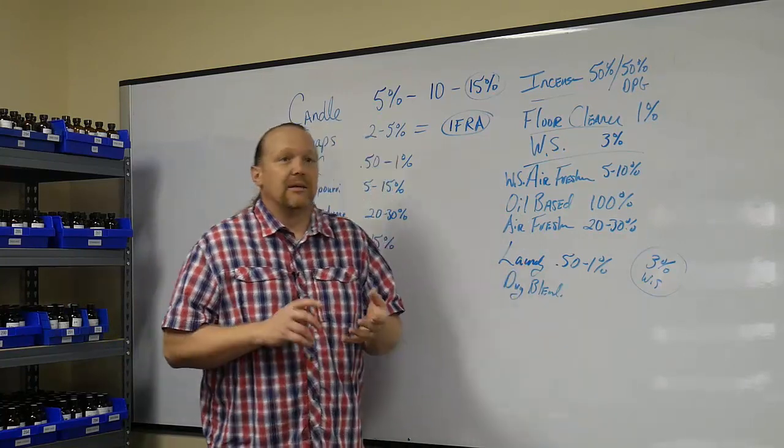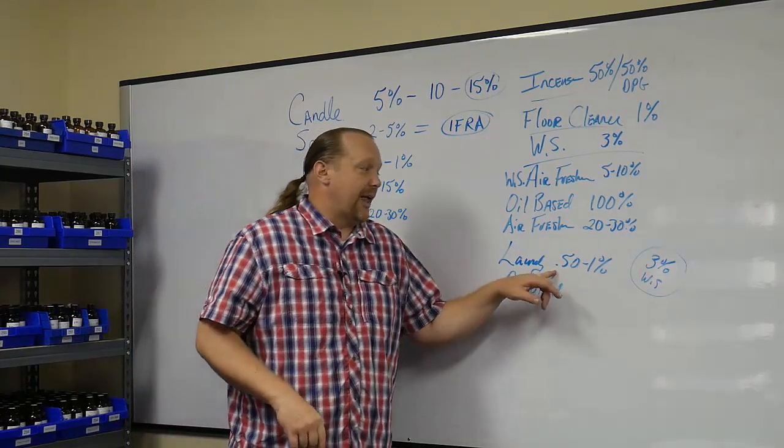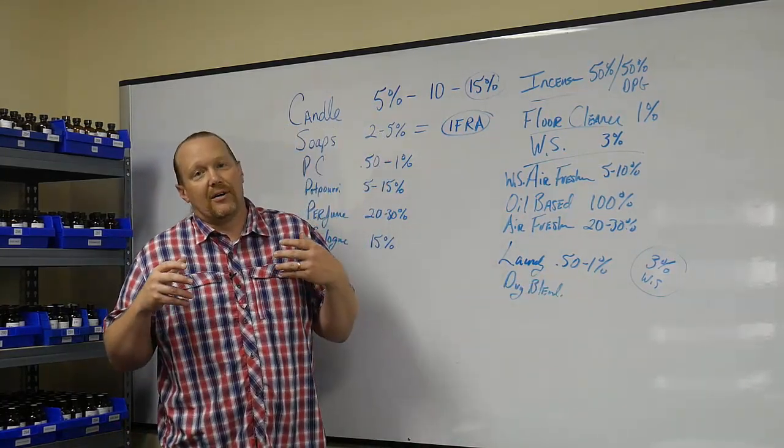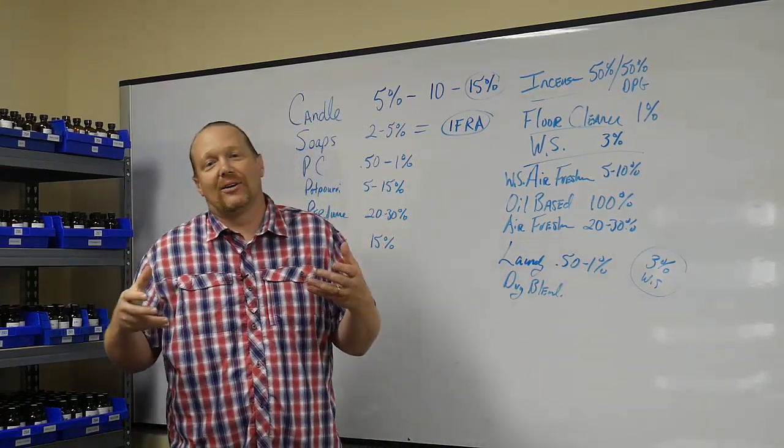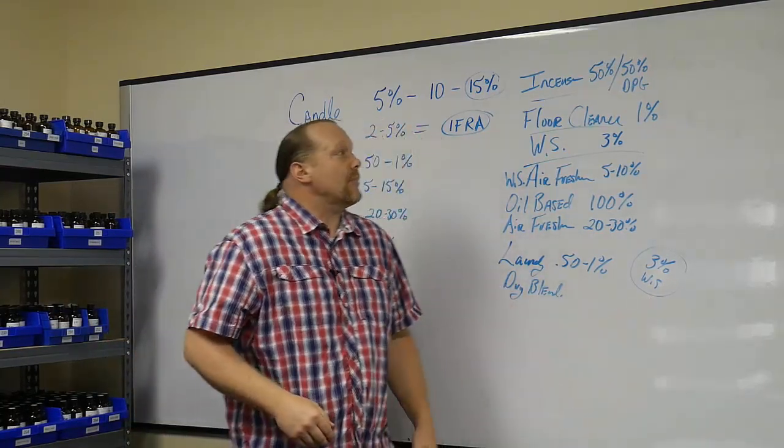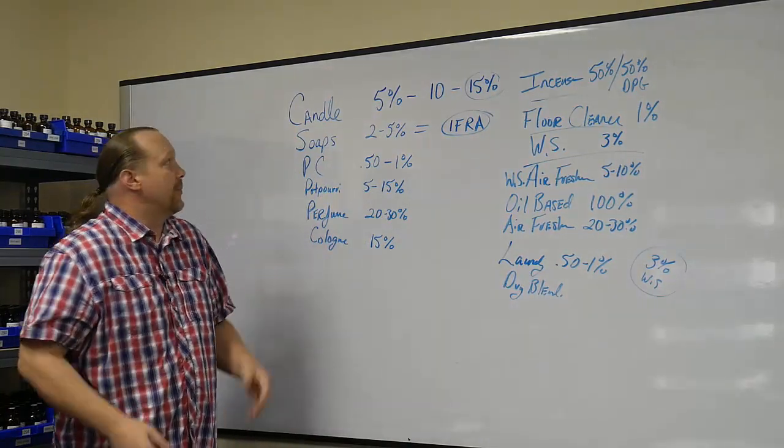Laundry, this could be liquid laundry soap or this could be the dry powder. You're looking at half a percent to 1%. And if you're going to have it already liquid detergent made and you're adding the fragrance on the back end, again, surfactant's already added. So that's a cut. You're going to want to use 3%. So this covers most of the products that we're selling on a day-to-day basis.